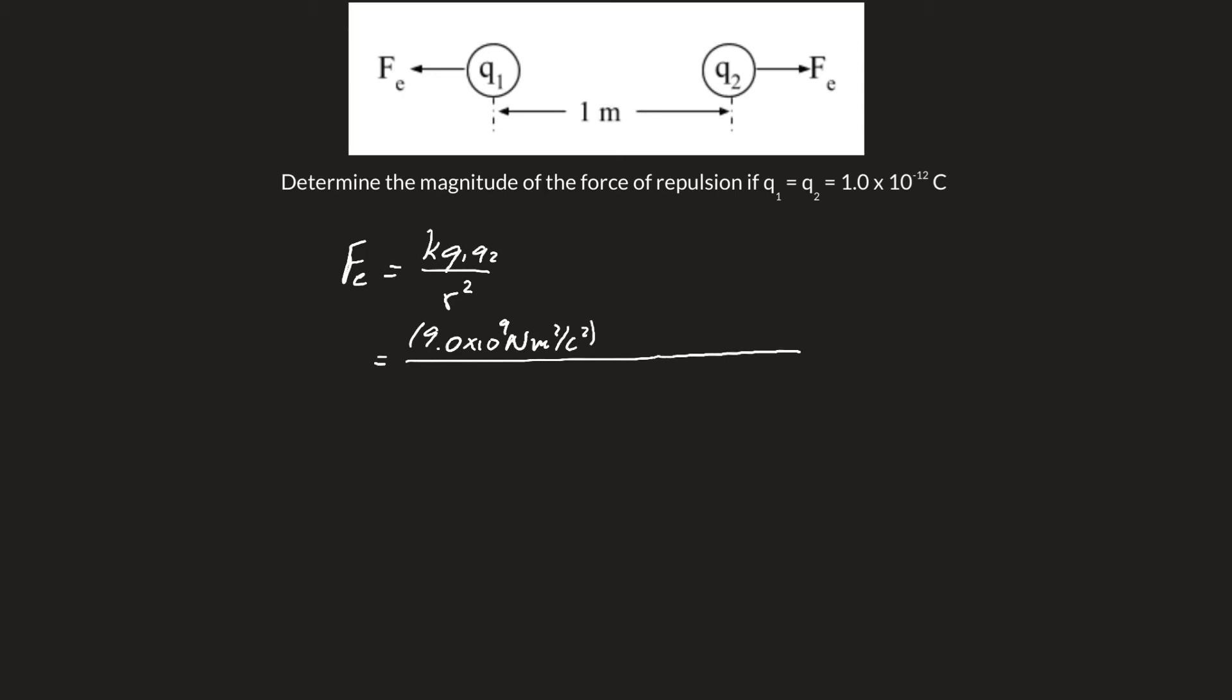What we'll be able to do is combine Q1 and Q2 to give us 1.0 times 10 to the negative 12 Coulombs all squared. That's divided by the radius, which is 1 meter, which is again squared.